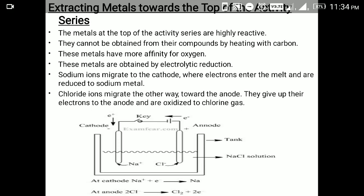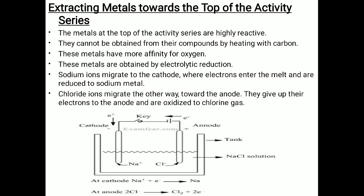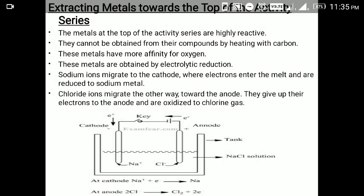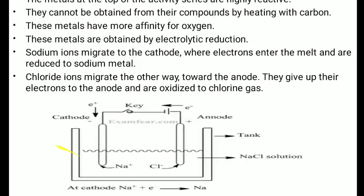These metals are obtained by electrolytic reduction. Sodium ions migrate to the cathode because the cathode is negative, where the electrons enter the melt and are reduced to sodium metal. Chloride ions migrate towards the anode because the anode is positive; they give up their electrons to the anode and are oxidized to chlorine gas.